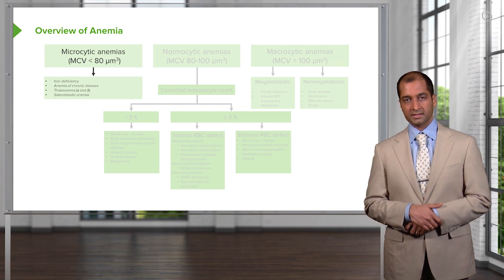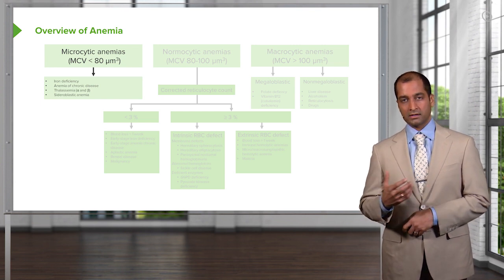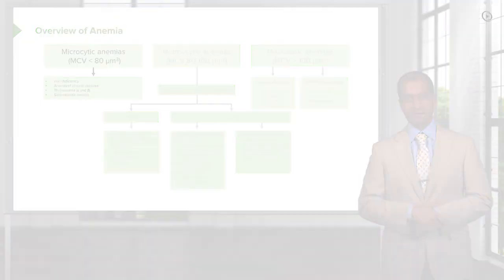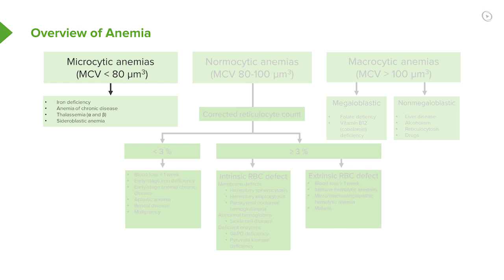Under microcytic anemia, which we will take on first and foremost, you pay attention to MCV being less than 80. Under microcytic anemia, we will walk through the differentials that you see here, and these include iron deficiency, anemia of chronic disease, sideroblastic, and also your thalassemias.